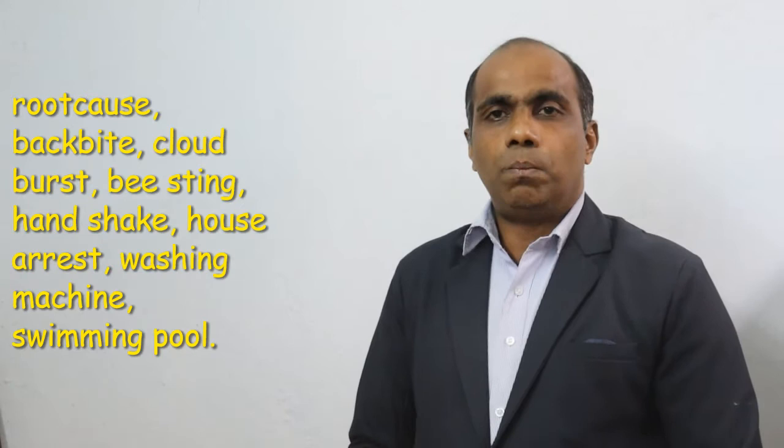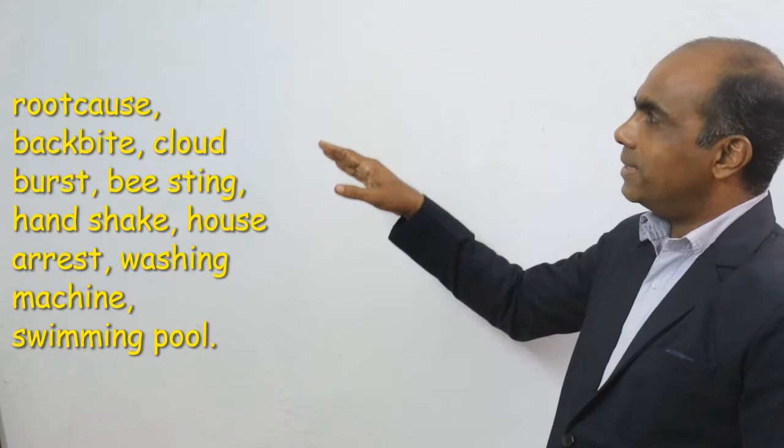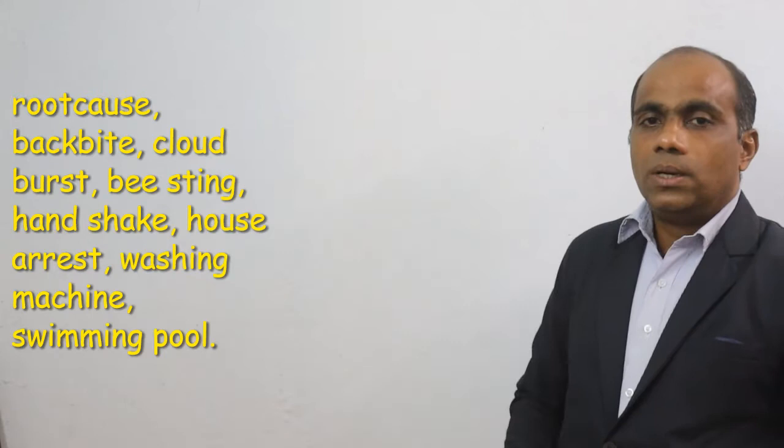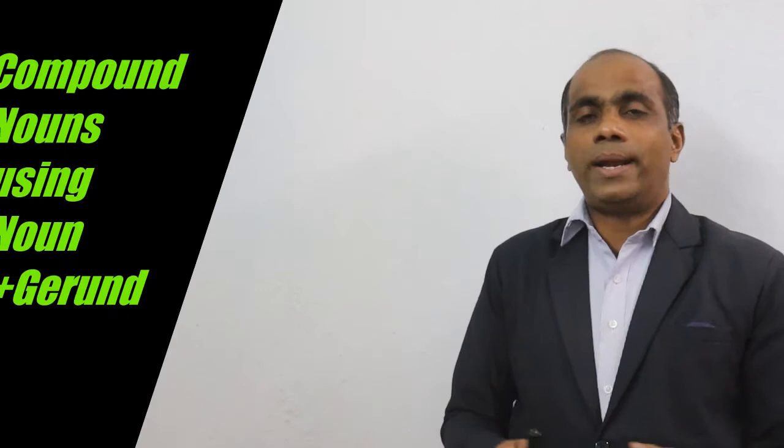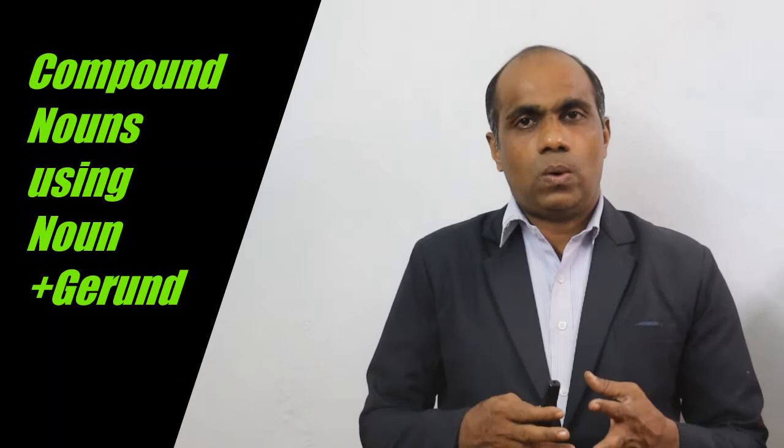How are they made? They are made of one noun and one verb. So compound nouns can be made with a noun and a verb. Now another way of making compound noun is noun plus gerund form.